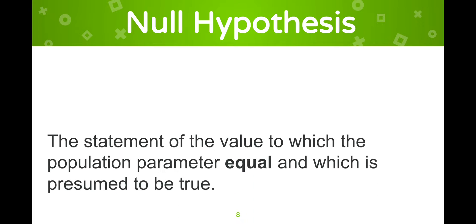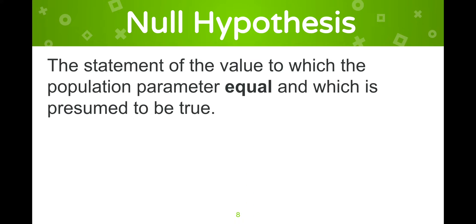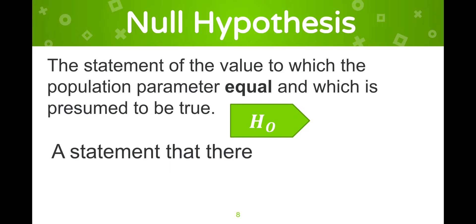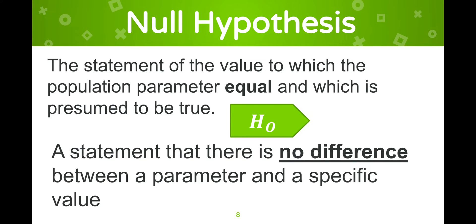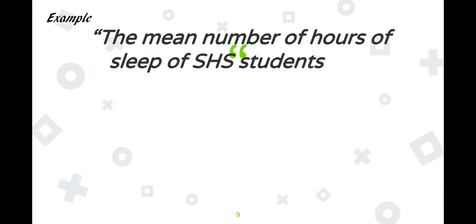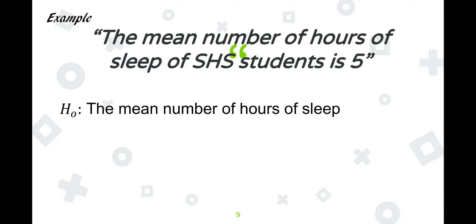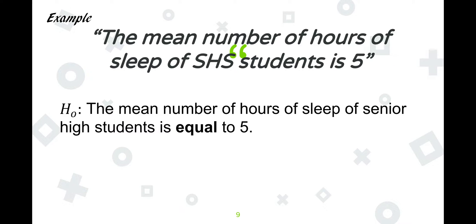The null hypothesis, denoted as H₀, is a statement of the value to which the population parameter is equal and which is presumed to be true. It is a statement that there is no difference between a parameter and a specific value. An example: the mean number of hours of sleep of senior high school students is 5, so the null hypothesis is: the mean number of hours of sleep of senior high school students is equal to 5.